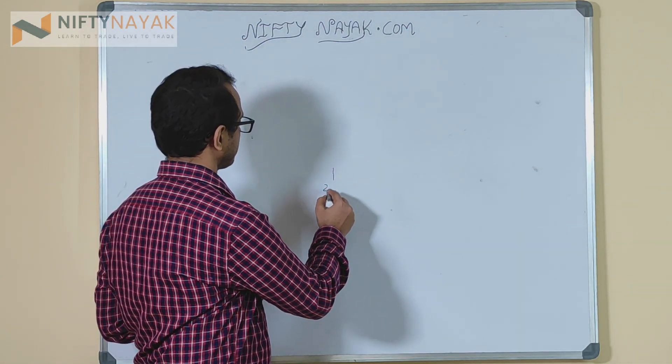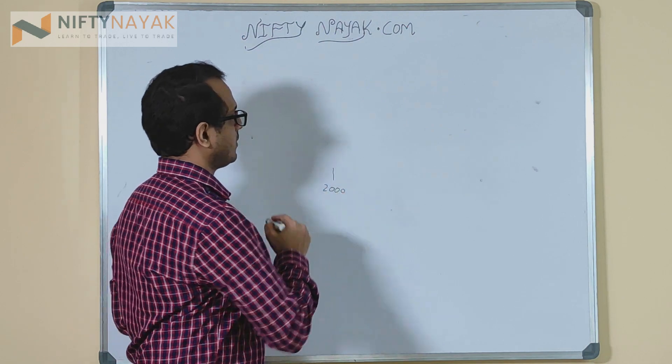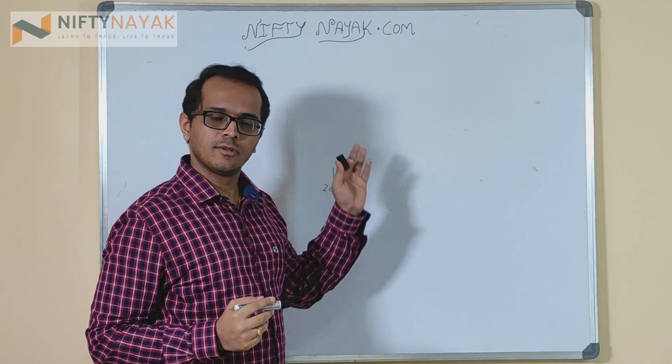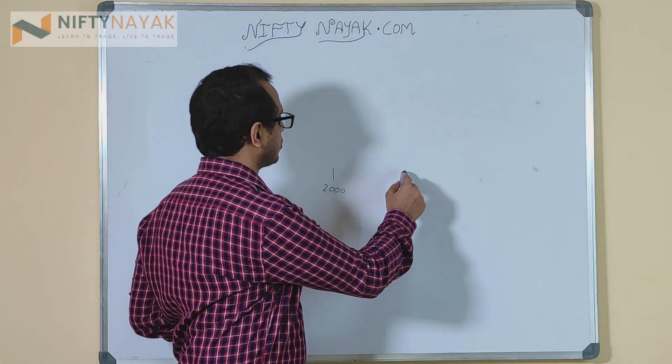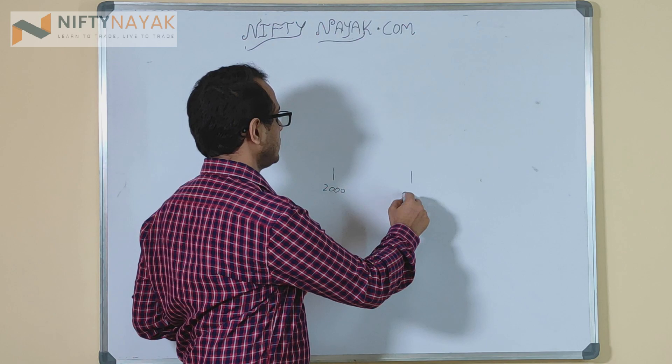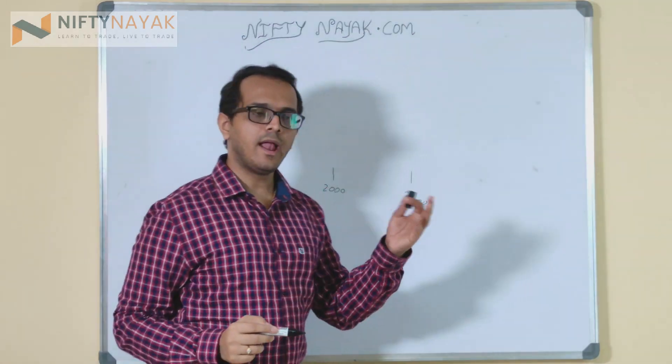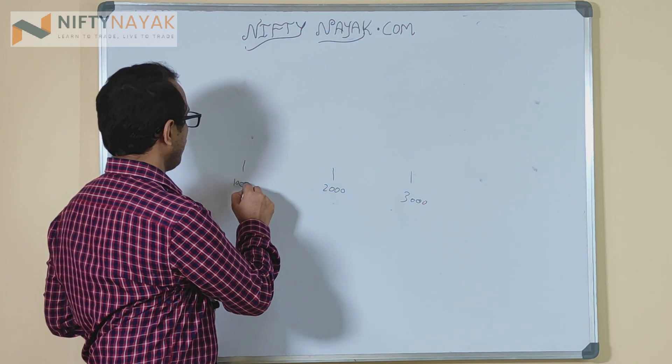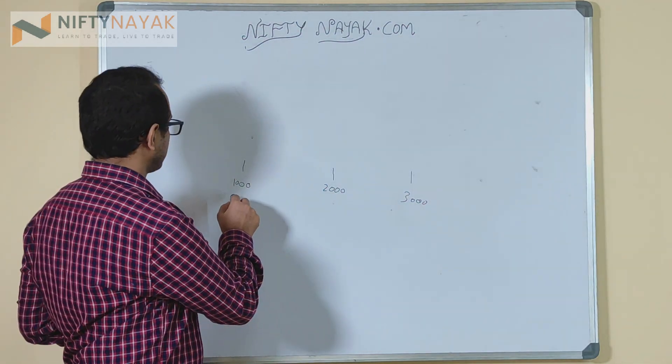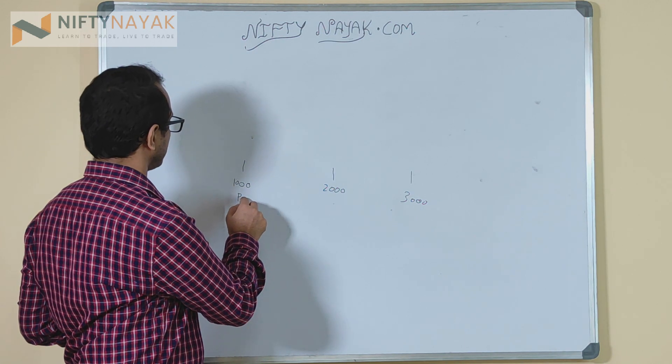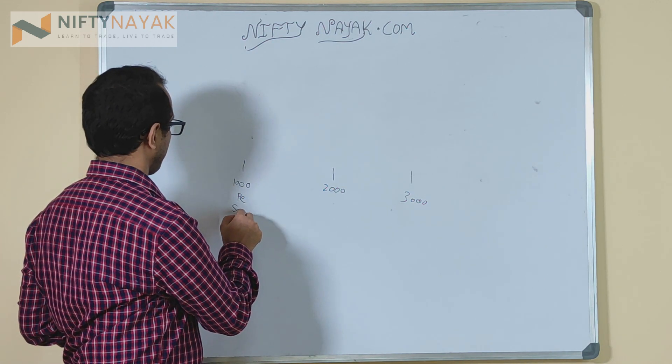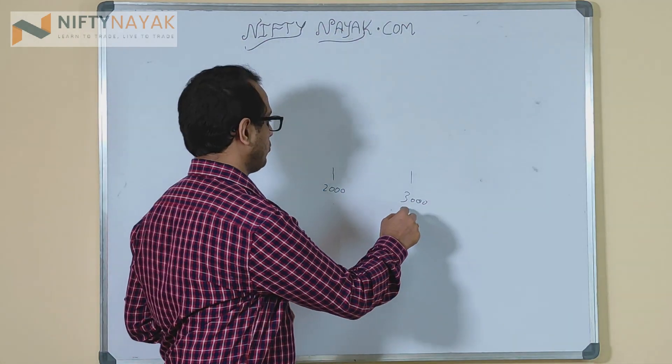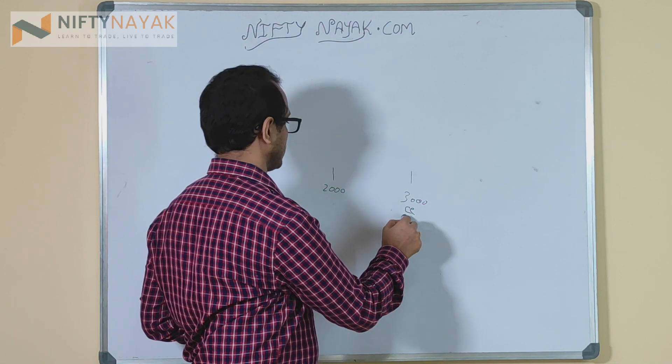Now I took an example of Reliance. Let's say Reliance is at two thousand rupees. You can sell options by telling that it will not go to three thousand, or you can sell options and tell it will not come to 1000. So if you are actually taking this bet, you will have to sell the put of 1000. If you are taking this bet, then you will have to sell the call of this bet.